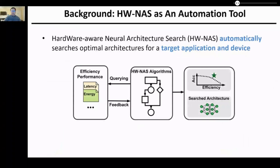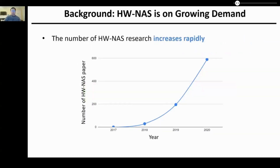Hardware-Aware Neural Architecture Search has gained increasing attention by automating the design of deep neural networks for target applications and devices. As shown in the figure, it interacts with the efficiency performance of networks in its search space and outputs the DNN architecture with optimal accuracy-efficiency trade-offs. The rapidly increasing number of HWNAS research papers also indicates HWNAS is in ongoing demand.